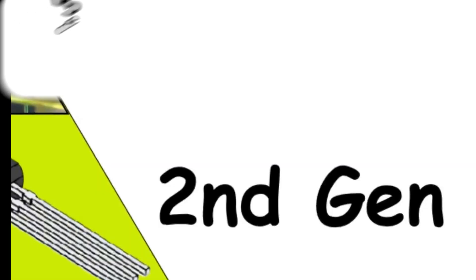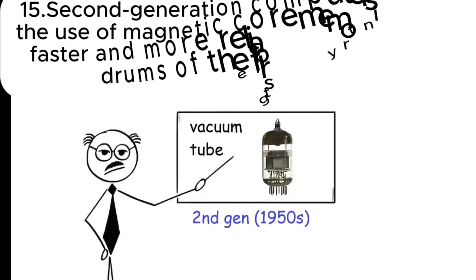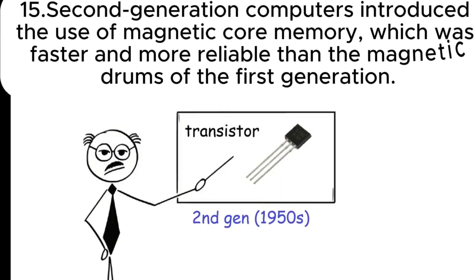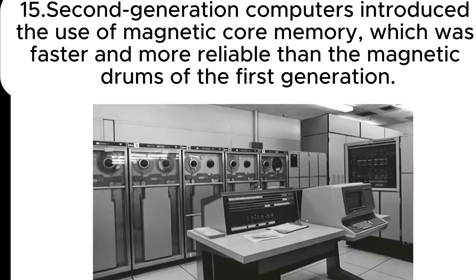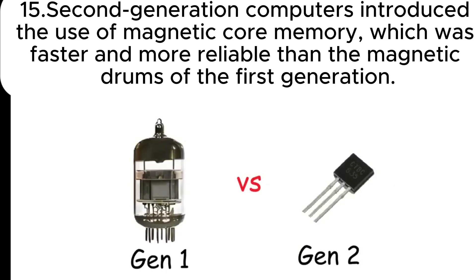Fifteen: second generation computers introduced the use of magnetic core memory, which was faster and more reliable than the magnetic drums of the first generation.